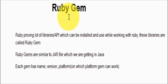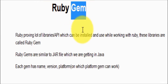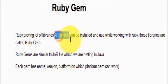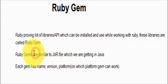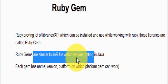Welcome to the testing world. In this session we are going to understand Ruby gems. Gems can be defined as libraries which we get in Ruby for different tasks. If I compare it with Java, we get JAR files there. Here gems are a set of executable files we use as libraries for different purposes. For example, if you want to read data from an Excel sheet, you need some libraries - in Ruby we call them gems. Ruby provides many libraries and APIs that can be installed and used. Each gem has its name, version, and the platform on which it can work.